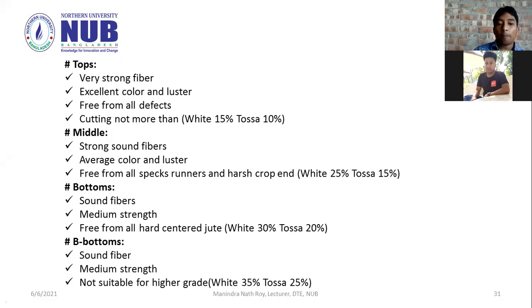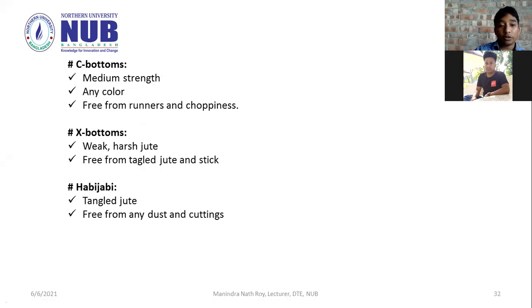Tops have very strong fiber, excellent color and luster. Middle, bottom B, bottom is the last classification — C bottom, X bottom. Quick, harsh jute, free from tail gill and jute stick.